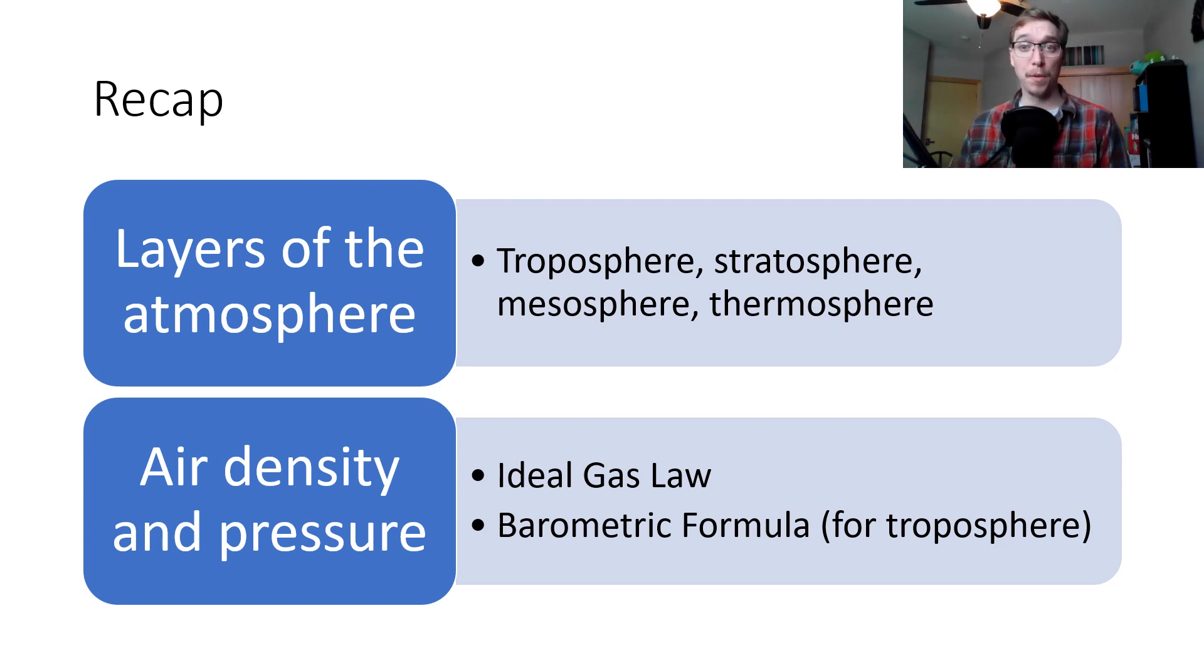Another quick recap. Layers of the atmosphere, we talked about the troposphere, stratosphere, mesosphere, and thermosphere. With air density and pressure, we talked about the ideal gas law, barometric formula, the troposphere, and understanding how density and pressure change with altitude. So that's all for this one. I will see you in the next video. We're going to continue talking about energy and the atmosphere. So we will see you then. Have a good day.